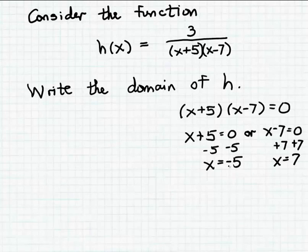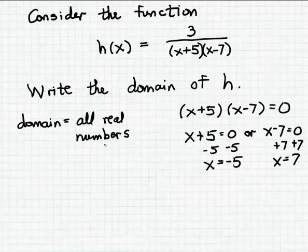So these are the two numbers that cannot be included in the domain of the function h. So we'll simply exclude those two numbers from all real numbers to give us the domain set. We can write down the domain just verbally in words by saying all real numbers except minus 5 and 7. But any other number will be in the domain of the function h.